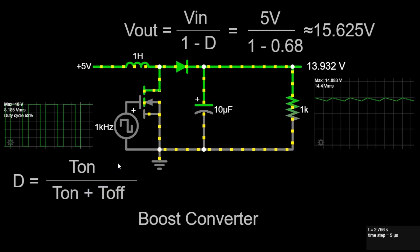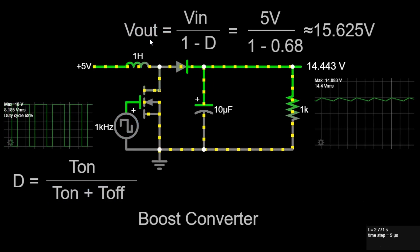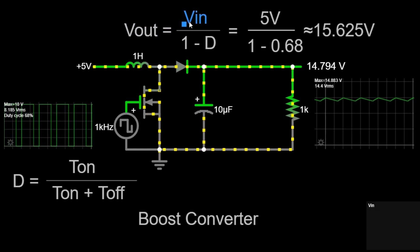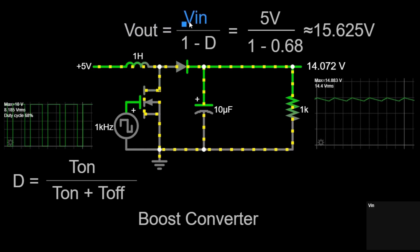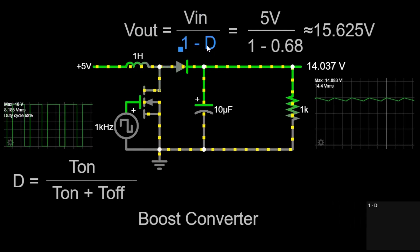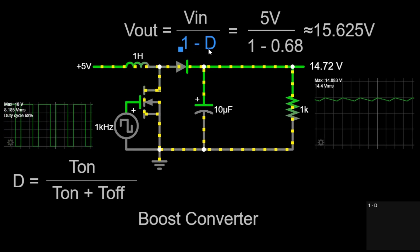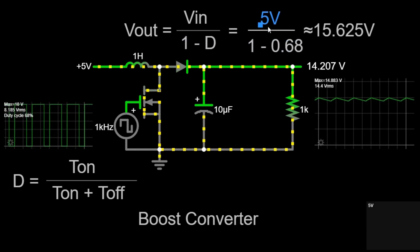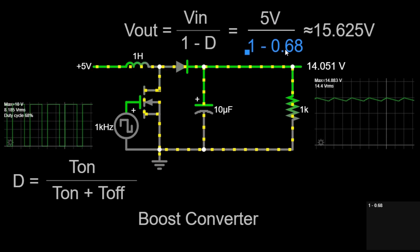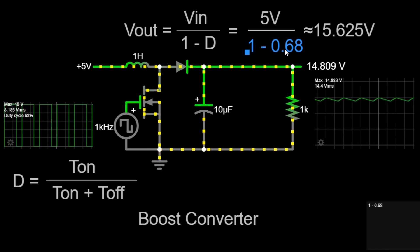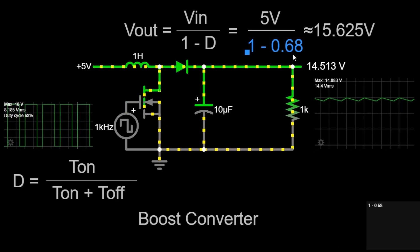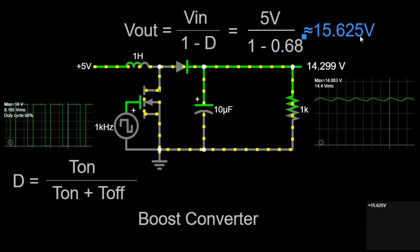The output voltage, represented by v out, of a boost converter can be calculated using the input voltage, represented by v in, and the duty cycle, represented by d. v out equals v in divided by 1 minus d. Given our input voltage of 5 volts and a duty cycle of 68%, we can calculate the expected output voltage: v out equals 5 volts divided by 1 minus 0.68, which is approximately 15.625 volts.